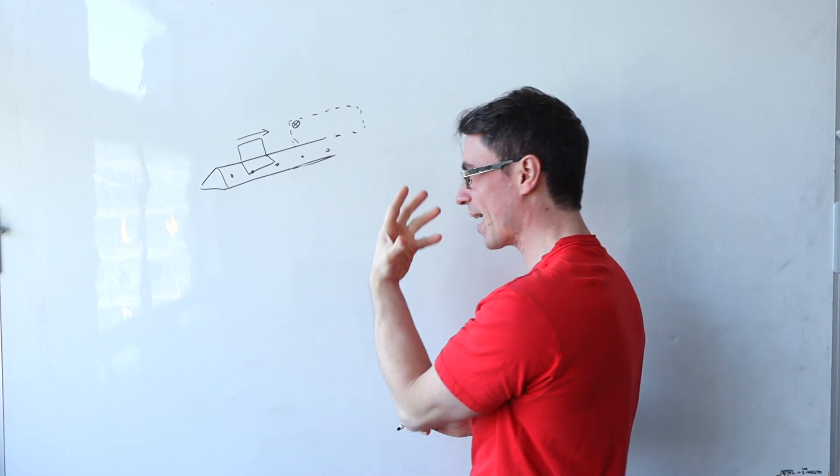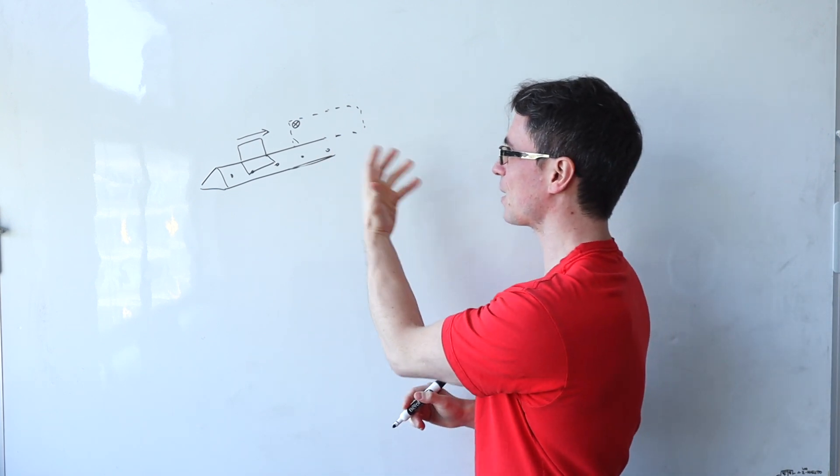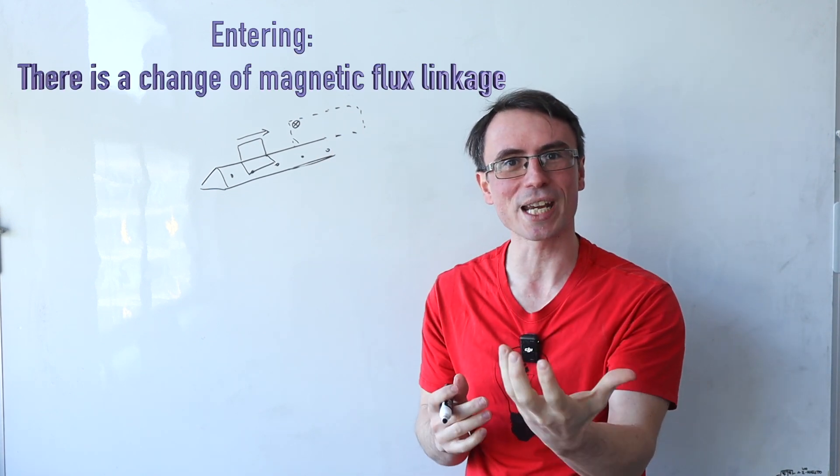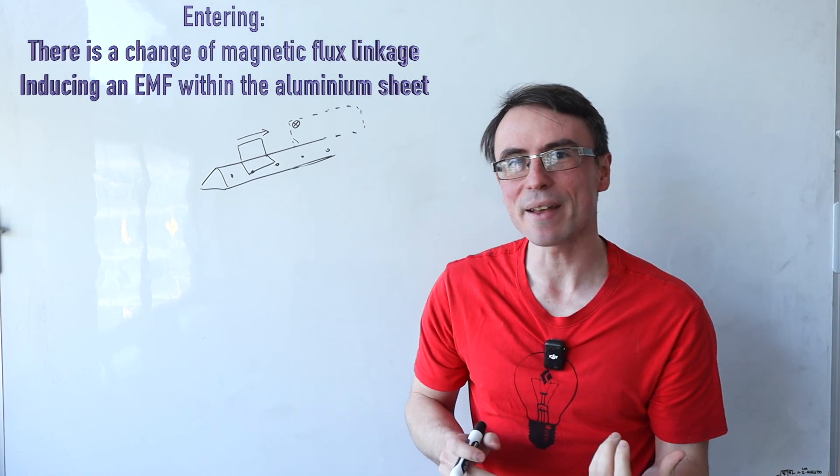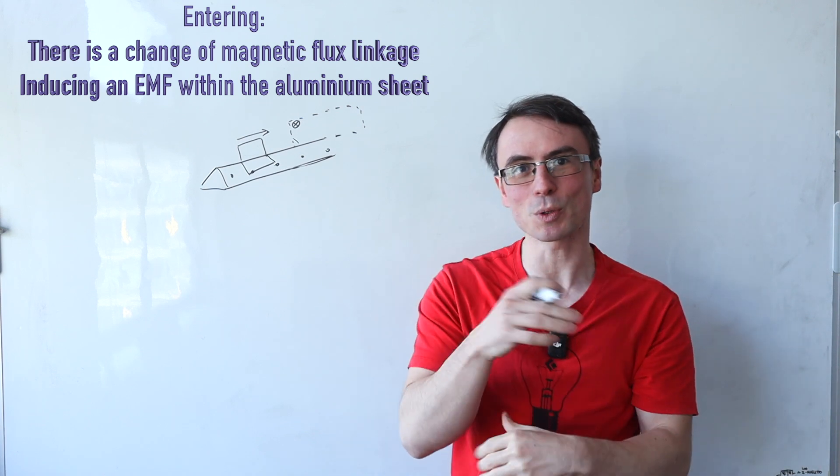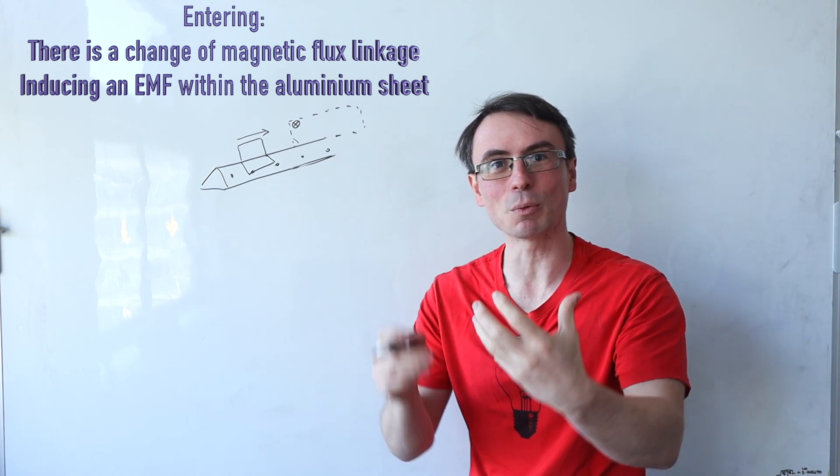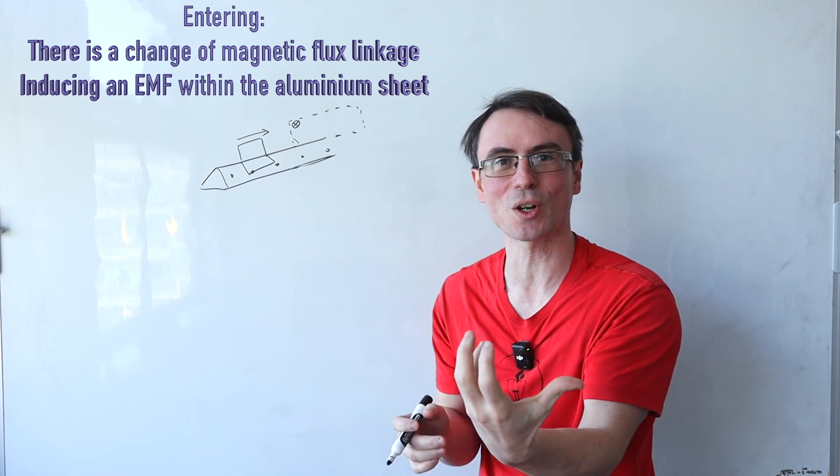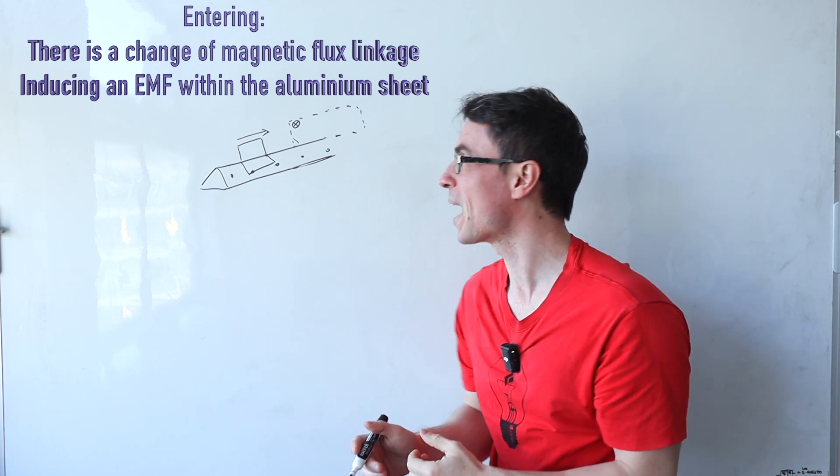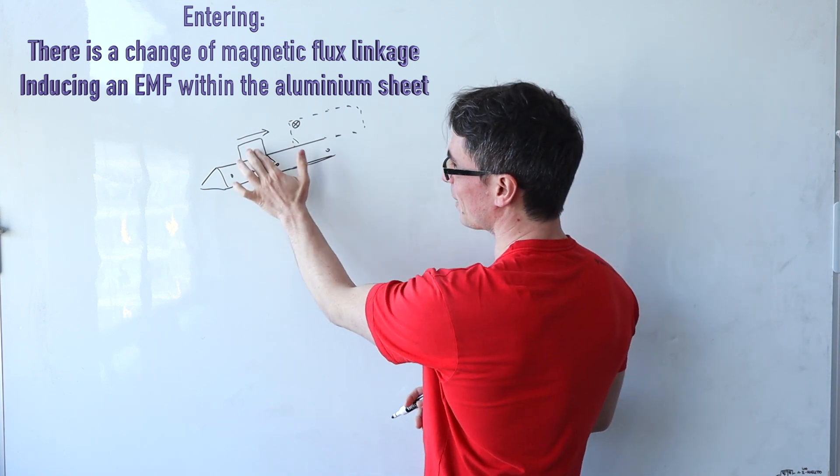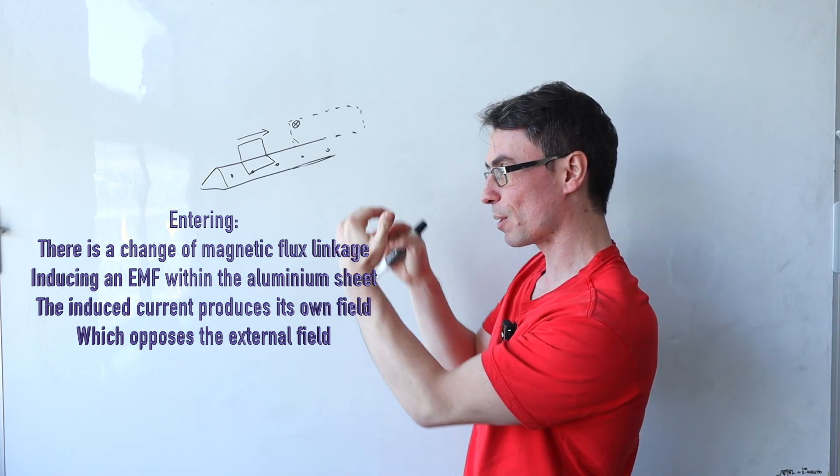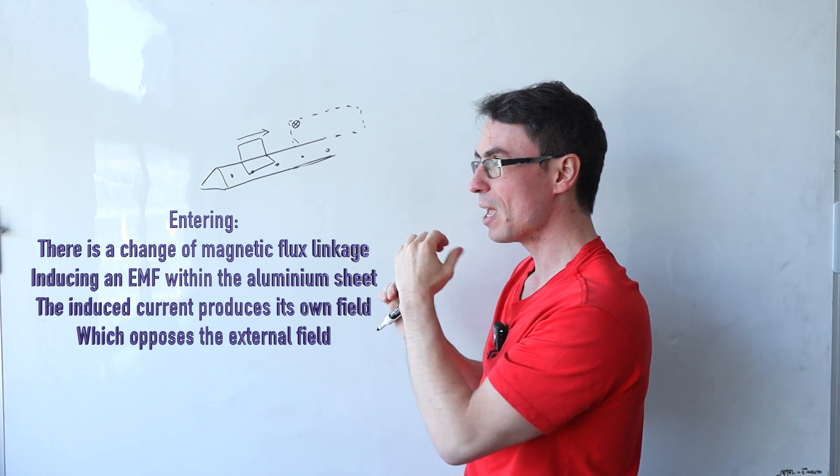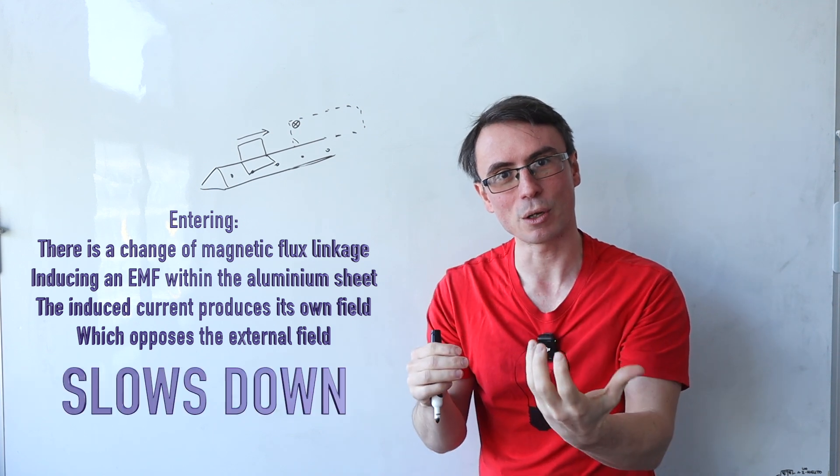This is aluminum. As it enters the magnetic field, there's a rate of change of magnetic flux linkage. This will induce an EMF within the aluminum sheet, which will have its own magnetic field that will oppose the change that caused it, i.e., Lenz's law. In other words, the aluminum sheet as it's entering will have its own field which is going to be opposing the external one, meaning that it will slow down.